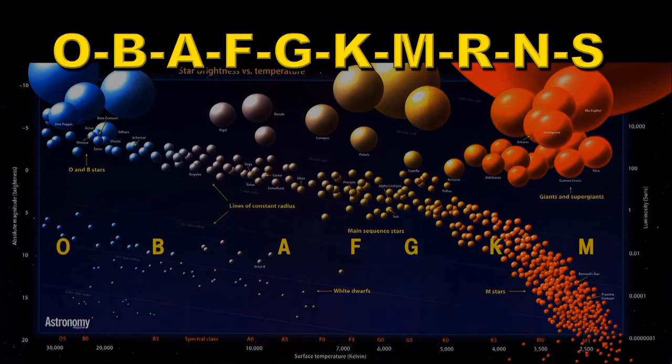There are a few outliers like the red giants and white dwarfs. We'll talk about those in a minute. Most stars lie along the diagonal, which is called the main sequence.